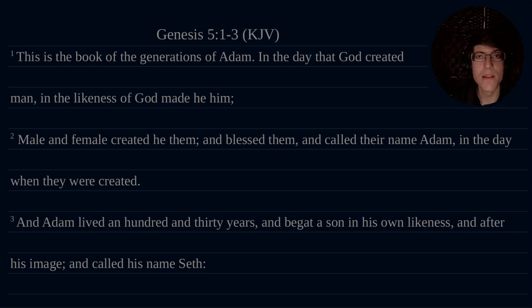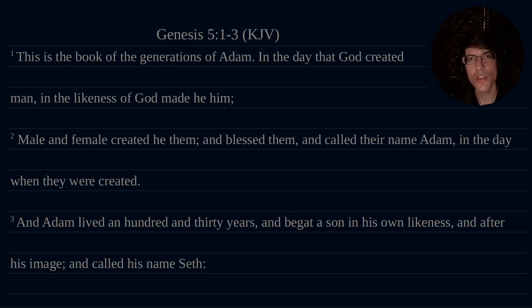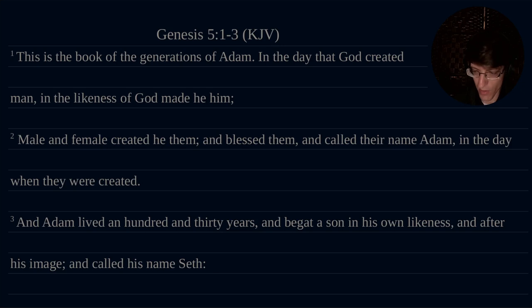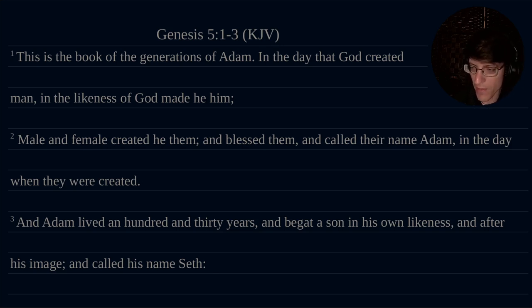Hello everybody. In today's Gregg Shorthand Drill, we will be going through Genesis Chapter 5, verses 1 through 3, King James Version. I'm going to pull that up here. There we go.